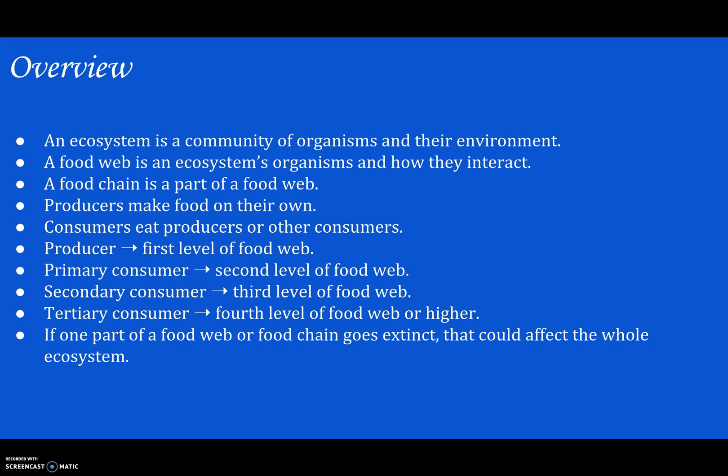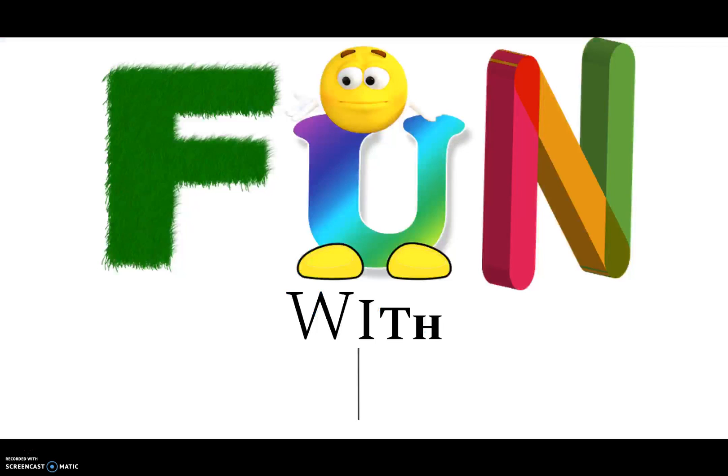The producer is the first level of the food web, primary consumers are the second level, secondary consumers are the third level, and tertiary consumers are the fourth level or higher. If one part of a food web, food chain, or ecosystem goes extinct, remember that could affect the whole ecosystem. I hope you enjoyed this episode of Fun with Science!